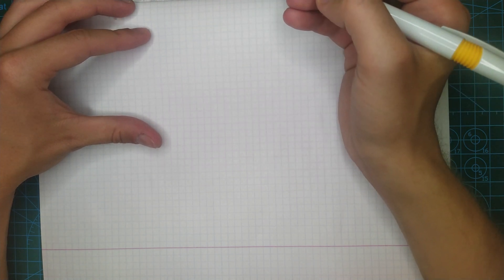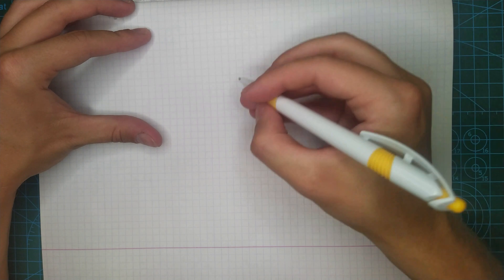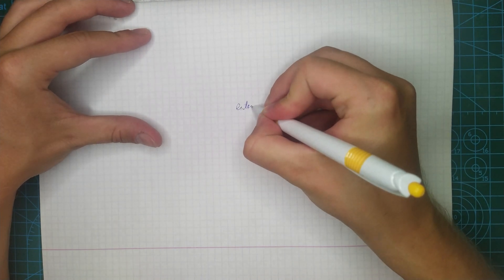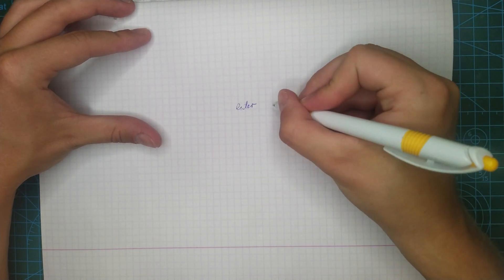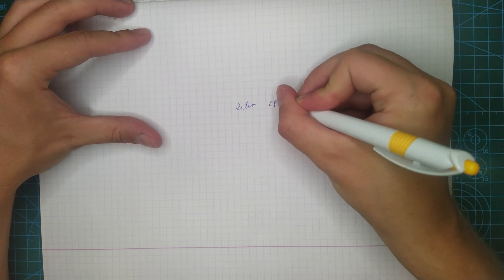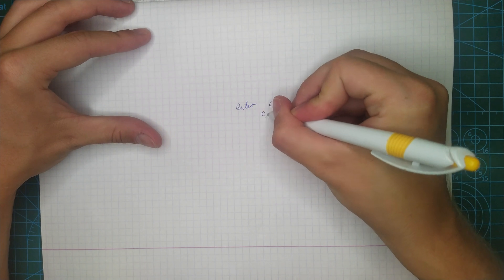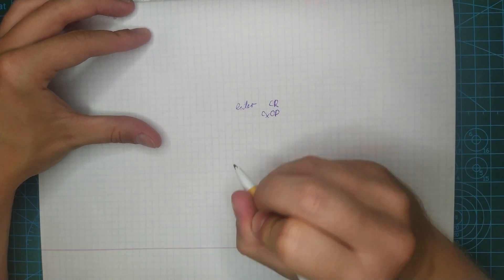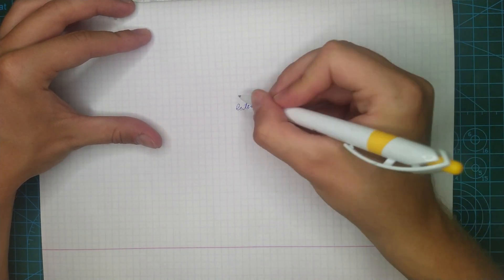We start with the most popular case: ENTER. ENTER will send not line feed, but carriage return. So, it is CR, it is 0x0D in hex or 13 decimal.